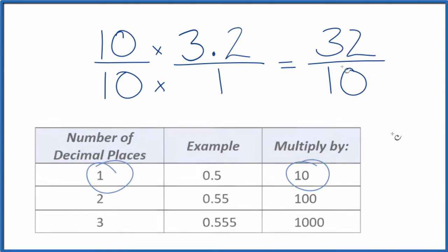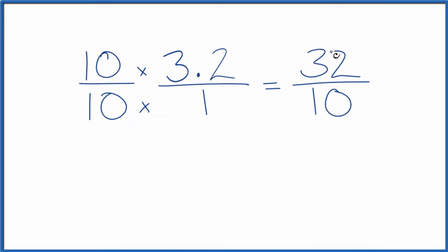So 10 times 1 is 10 and now the decimal 3.2 equals the fraction 32 tenths. And we can simplify this further. Since they're both even numbers let's divide them both by 2.